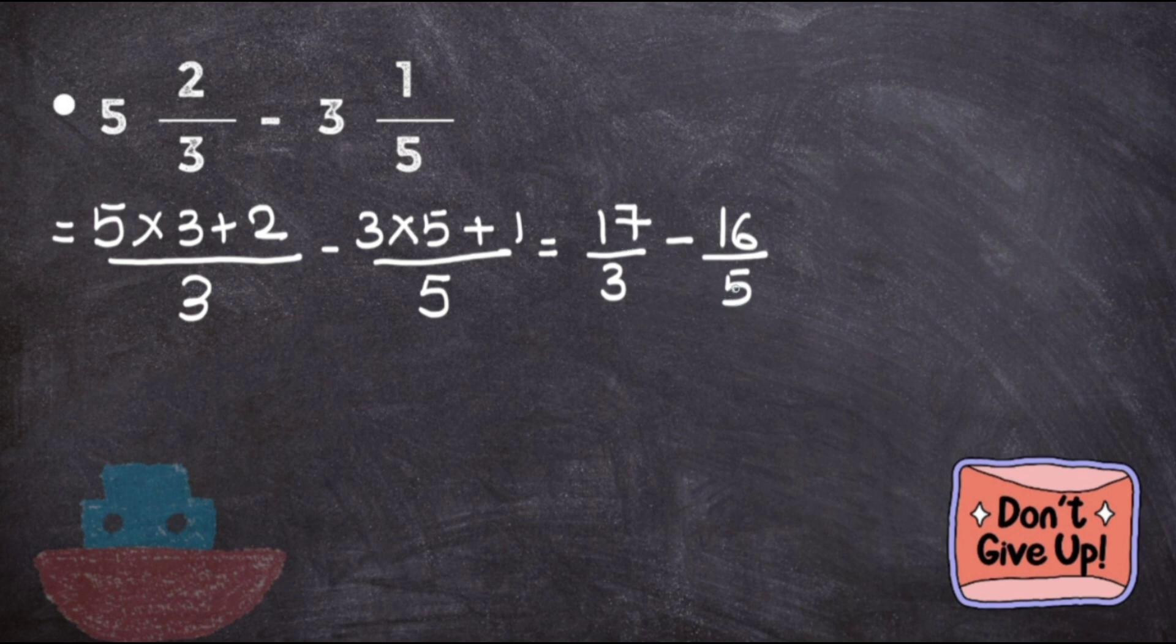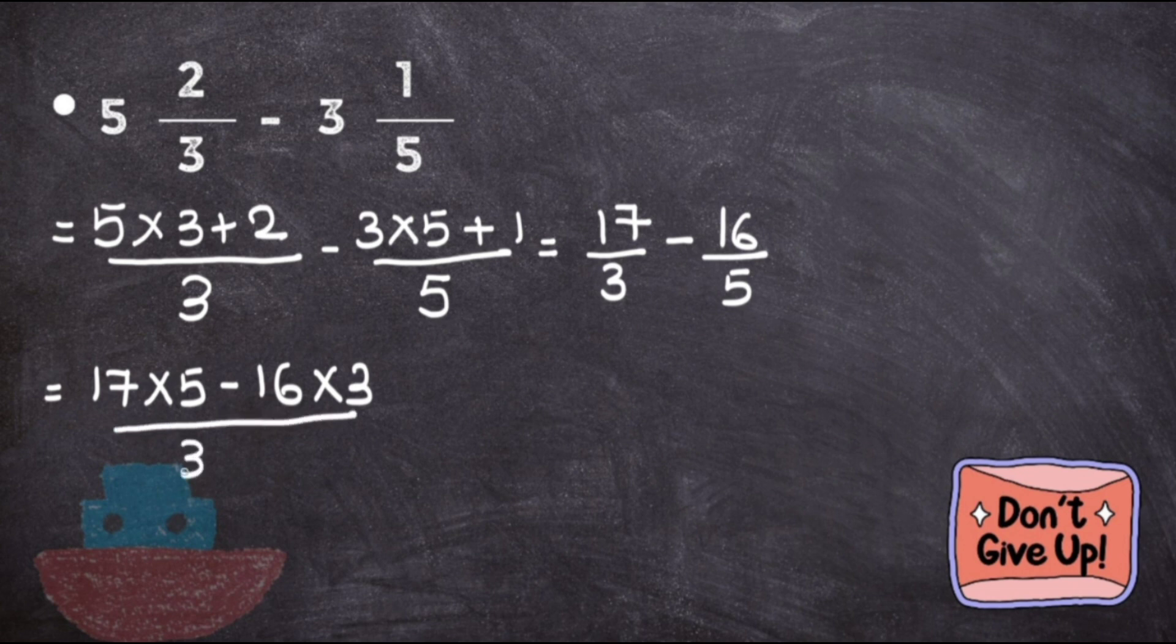Your first fraction will be 17 times 5 minus 16 times 3, all upon 3 times 5. This equals 85 minus 48 equals 37 upon 15.